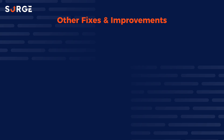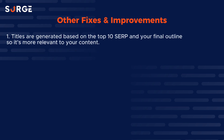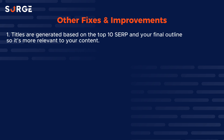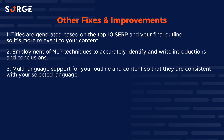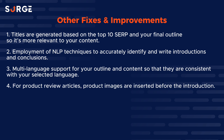Other than the major updates, we also worked on smaller fixes and improvements that made a major difference in overall quality and performance. First, titles are generated based on the top 10 SERP and your final outline so they're more relevant to your content. Second, employment of NLP techniques to accurately identify and write introductions and conclusions. Third, multi-language support for your outline and content so that they are consistent with your selected language. Fourth, for product review articles, product images are inserted before the introduction.